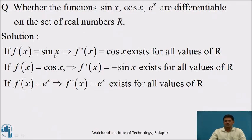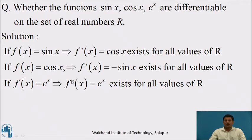Now consider the second function f(x) = cos x. Differentiating, we get f'(x) = -sin x, and the value of -sin x exists throughout ℝ. Hence, cos x is a differentiable function. Lastly, take f(x) = e^x. Differentiating gives f'(x) = e^x · 1 = e^x, and e^x exists for all values in ℝ. Therefore, all three functions sin x, cos x, and e^x are differentiable on ℝ.